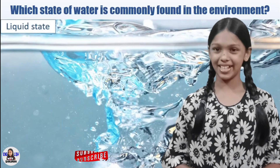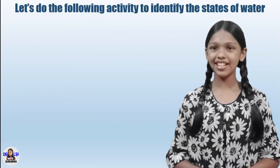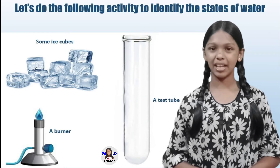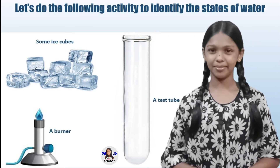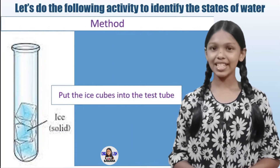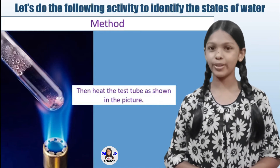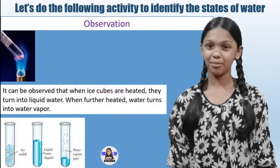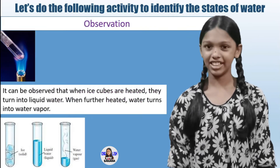Let's do this activity to identify the states of water. For this activity we need some ice cubes, a test tube, and a burner. Method — first step: put the ice cubes into the test tube, then heat the test tube as shown in the picture.